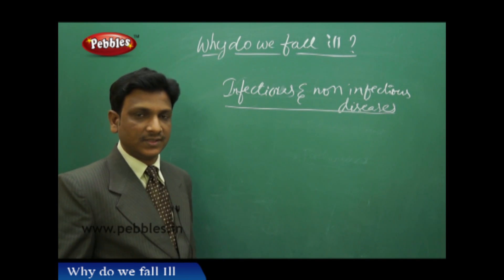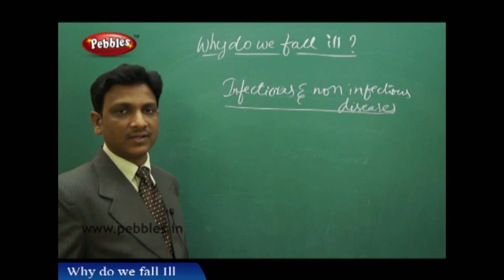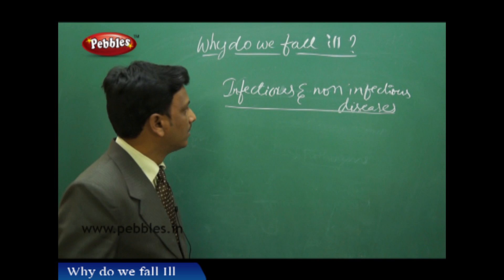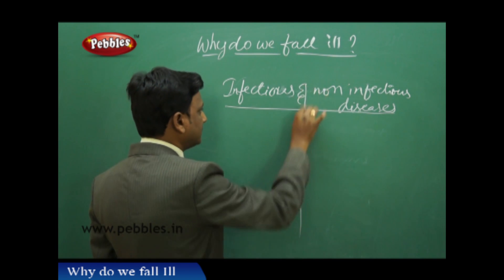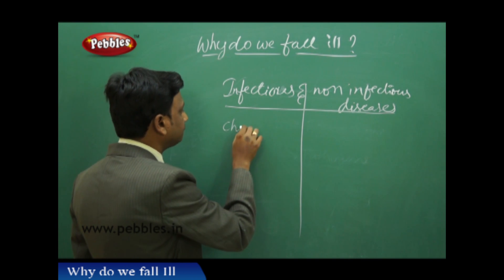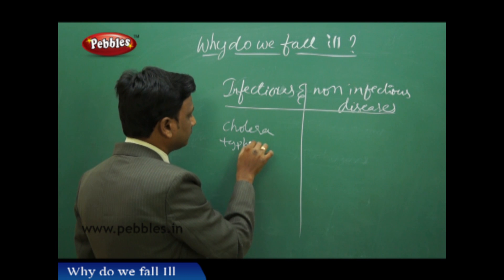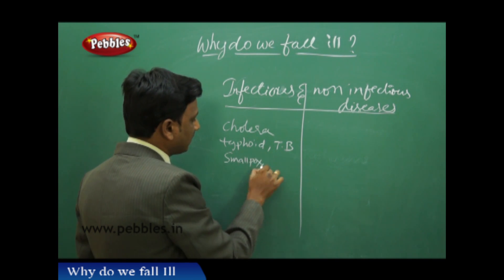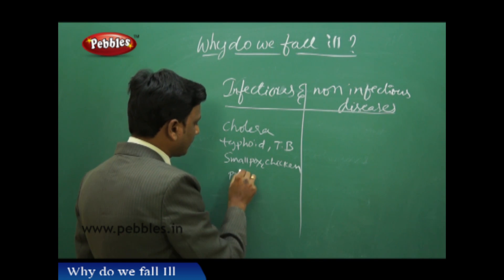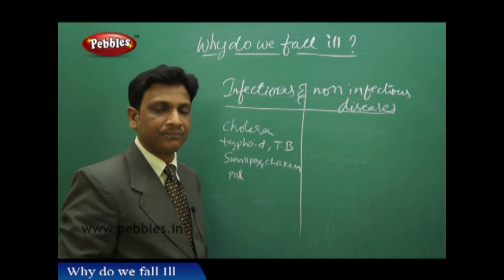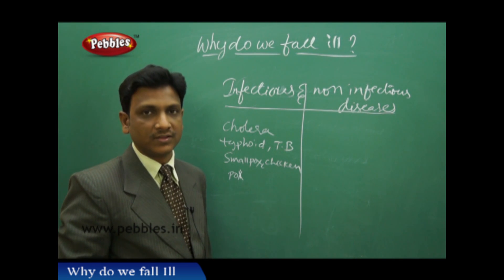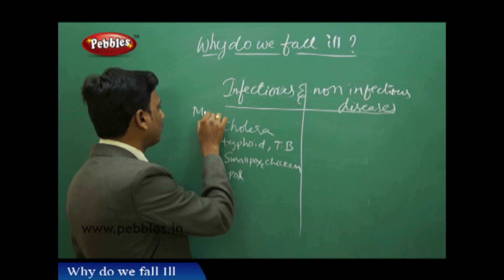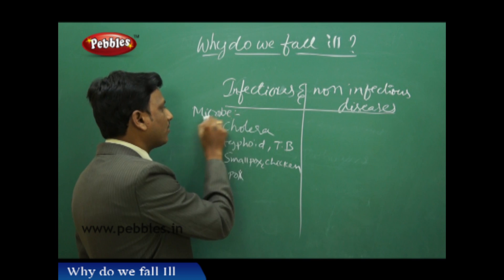Now let's look at infectious and non-infectious diseases. Diseases that spread from one person to another are called infectious diseases, also known as communicable diseases. Examples include cholera, typhoid, TB, smallpox, and chickenpox. Most infectious diseases are caused by microorganisms — pathogens like viruses, bacteria, protozoa, and fungi — which cause these diseases.